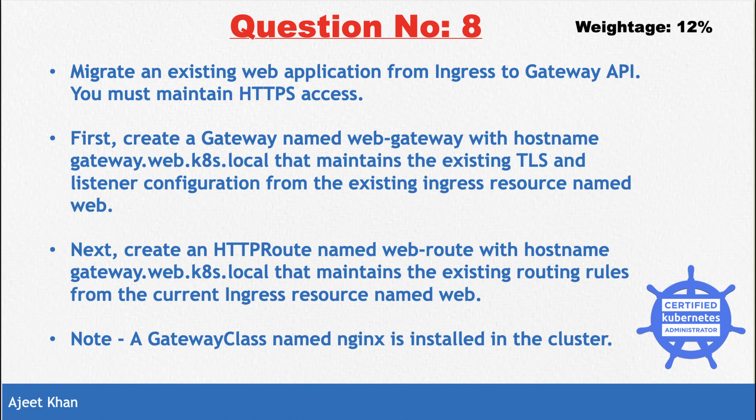The question is: migrate an existing web application from ingress to Gateway API while maintaining HTTP access. First, we need to create a gateway named 'web-gateway' with the hostname 'gateway.web.kts.local', and it should maintain the existing TLS and listener configuration from the existing ingress resource named 'web'.